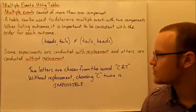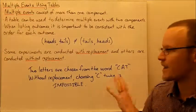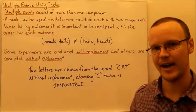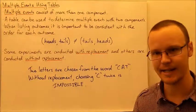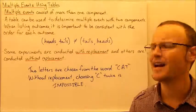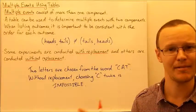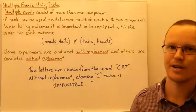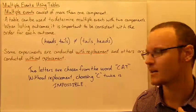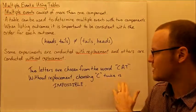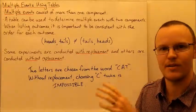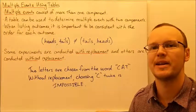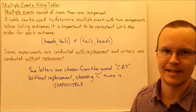But say we have two letters chosen from the word CAT without replacement. If we're picking them out of a bag, we're not replacing that C back into the bag, so it can't be chosen again the second time. Without replacement means it cannot be chosen for the second component. So choosing C twice is impossible. I can't pick out a C and then expect to pick out another C if I've not replaced it in the bag.